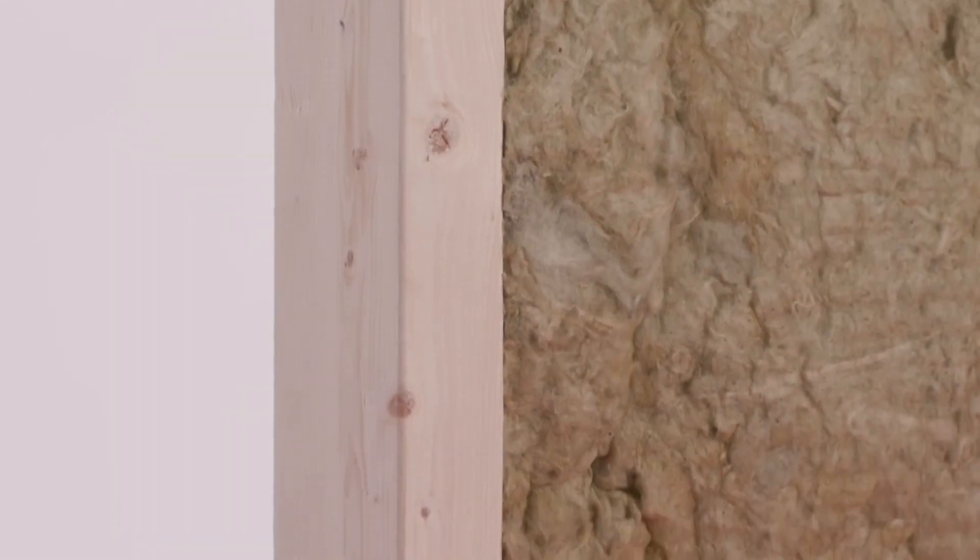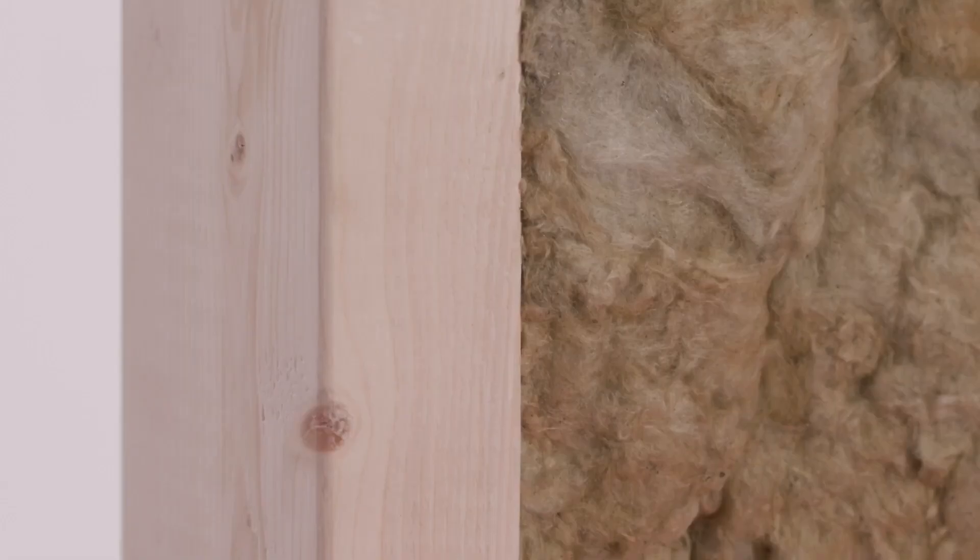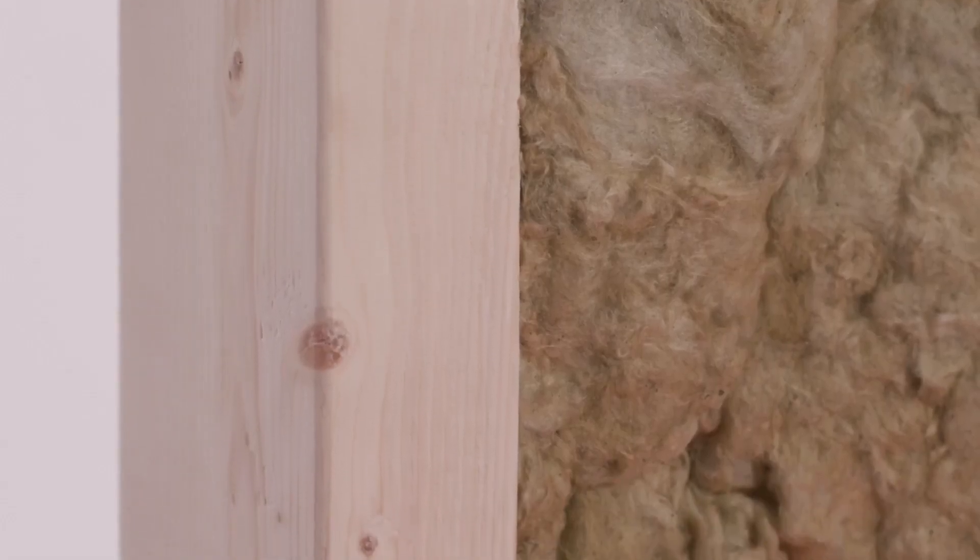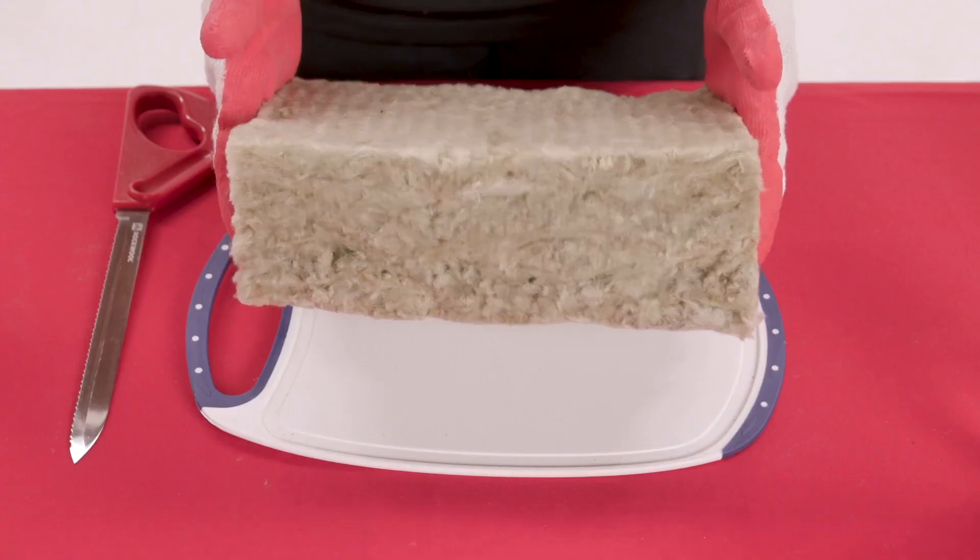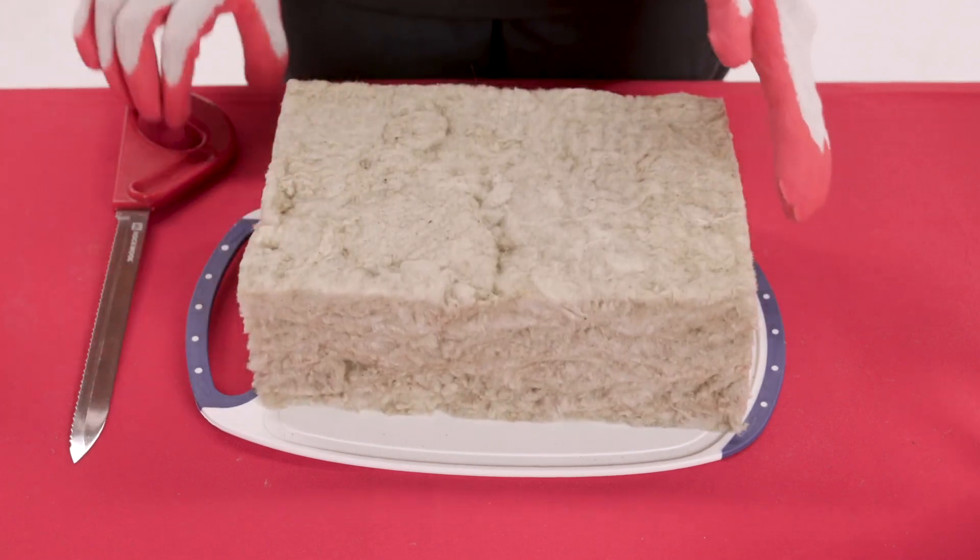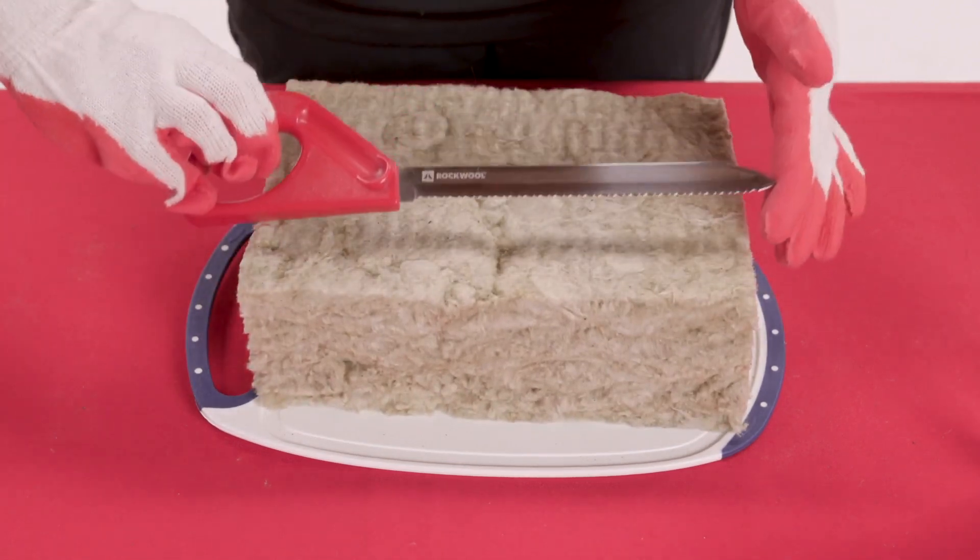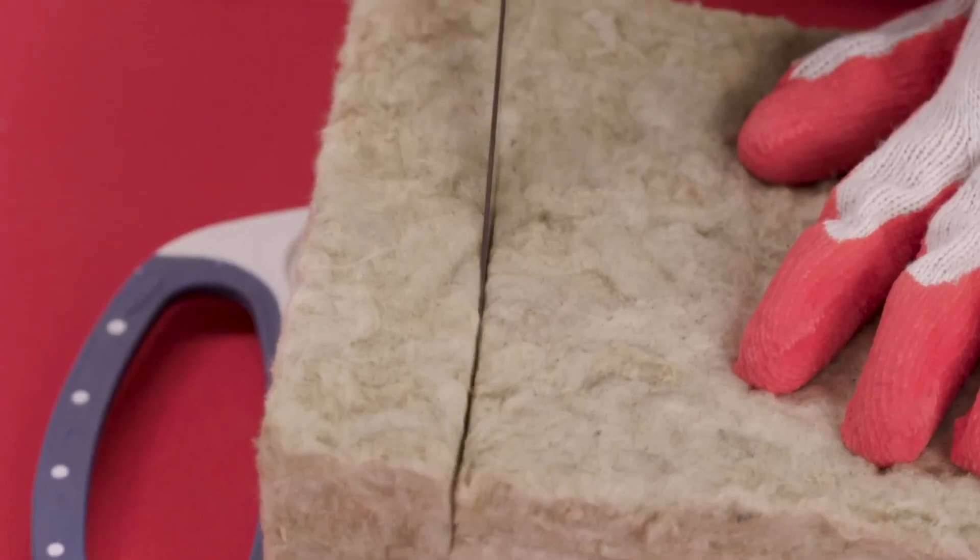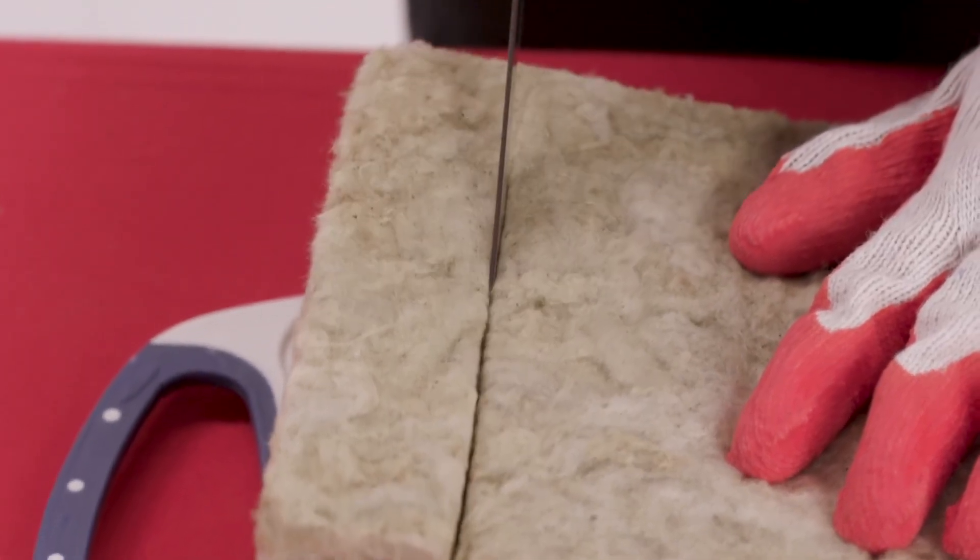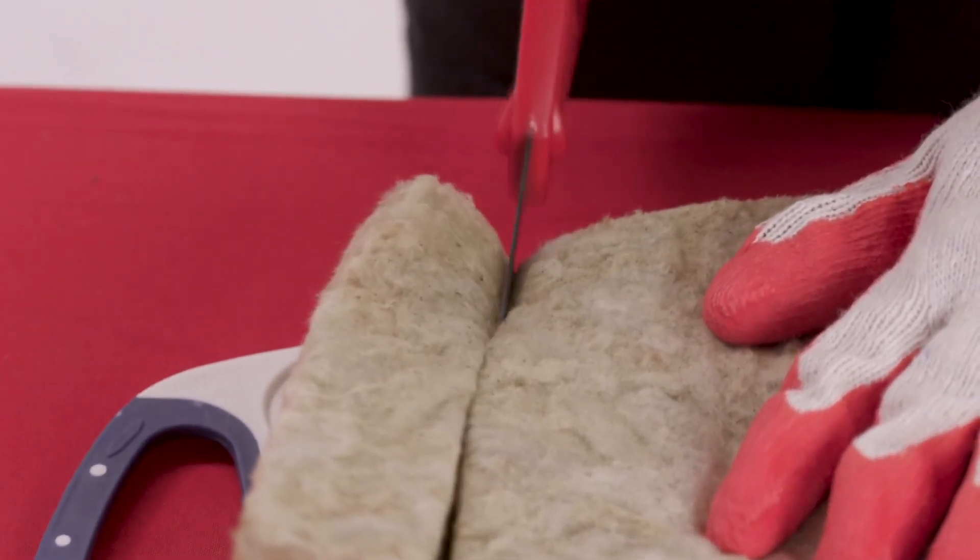Fit is critical to achieving top R-value performance. The high density and fiber structure of Rockwool stonewool insulation make it very easy to cut so you can get the best fit possible in all situations. Using a simple serrated bread knife, we show how quickly, easily and accurately Rockwool stonewool insulation can be cut.